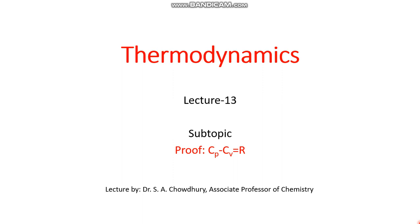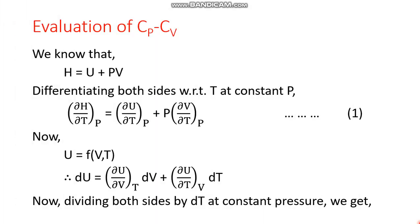Hello everyone, our next topic of thermodynamics is proof of Cp minus Cv equals R. In order to do this, we have to find out the difference of Cp and Cv. We all know that Cp is greater than Cv because the system has to do some extra mechanical work, and that work is equal to the universal gas constant R.